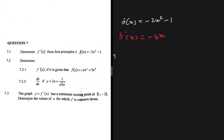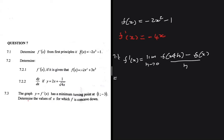So for 7.1 we say f prime of x is equal to the limit as h tends to 0 of f(x+h) minus f(x), everything divided by h. This will equal the limit as h tends to 0, and then for f(x+h) we write the equation of f(x) but everywhere we have x we put x+h instead. It's that simple.